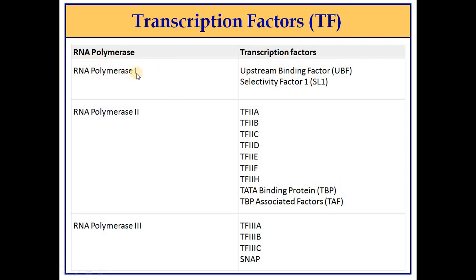RNA polymerase 1 requires upstream binding factor (UBF) and selectivity factor 1 (SL1). For RNA polymerase 2, transcription factors TF2A, B, C, D, E, F, and H are required, along with TATA binding protein (TBP) and TBP-associated factors (TAFs). RNA polymerase 3 requires transcription factors TF3A, B, C, SNAP, and AP.